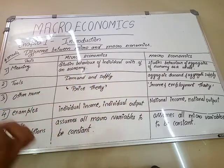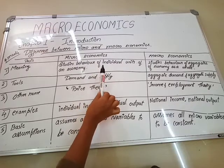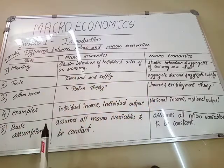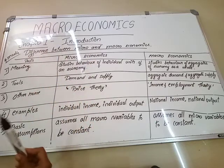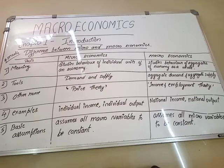Suppose if I am studying one particular firm — let us say this one marker — that comes under microeconomics. Then what is macroeconomics? It is that part of economics which studies the behavior of aggregates of the economy as a whole. When we are studying collectively, it becomes macroeconomics. Suppose there are a lot of companies selling markers, dusters, and chalks — that becomes an industry, and the study of industry is macroeconomics. But the study of a single firm is microeconomics.